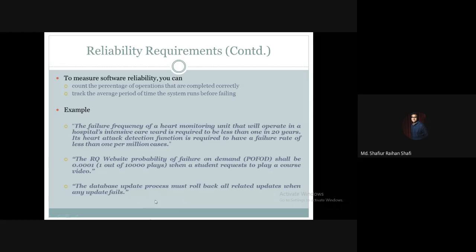The database update process must roll back all related updates when any update fails. This is a very common property in databases. If the transaction is a failure, it will roll back to the previous update. So if the database update fails, it must roll back all related updates. This is a reliability requirement.